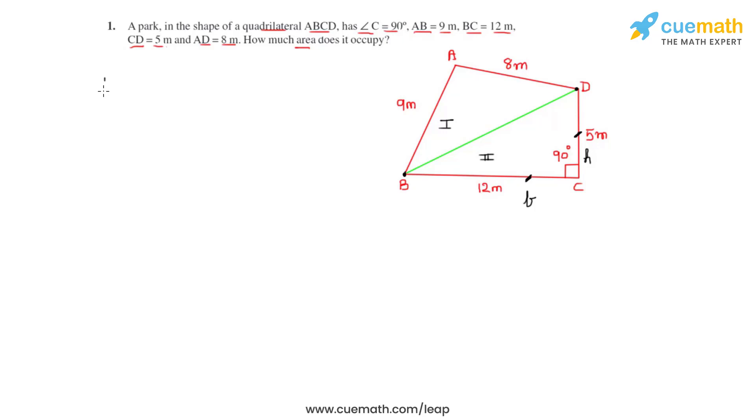So by Heron's formula, we can find the area A of any triangle by writing √[S(S-A)(S-B)(S-C)], where S is the semi-perimeter for a triangle and A, B, C are the three side lengths.